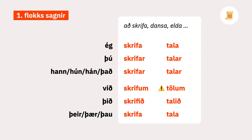All class 1 verbs, including ætla, follow this pattern. In the singular, all the forms have an 'a' as part of their ending. If the verb contains an 'a' in its stem, like tála, then there is a possibility of u-shift in the first-person plural form — for example, við tölum. This u-shift is triggered by the 'ö' in the 'um' ending.